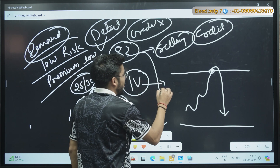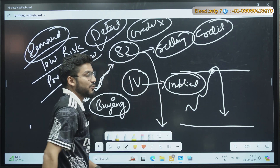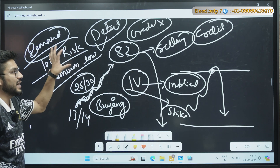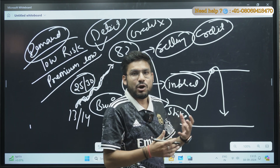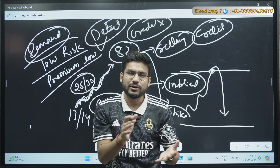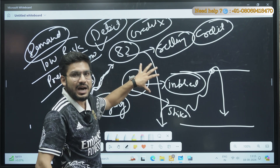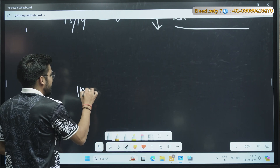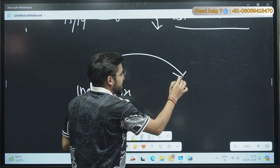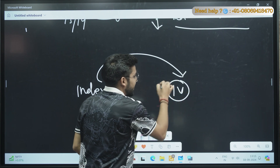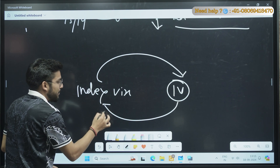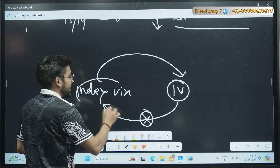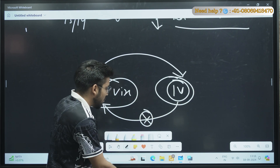There is one more term in the option chain: IV, that is Implied Volatility. Implied volatility is the forecasted momentum. You will generally see an IV at every strike price. India VIX gives us the scenario of the whole index for the upcoming 30 days, whereas IV gives us the idea of a particular strike price. The key relationship: when India VIX changes it will impact IV, but when IV changes it will not impact India VIX.